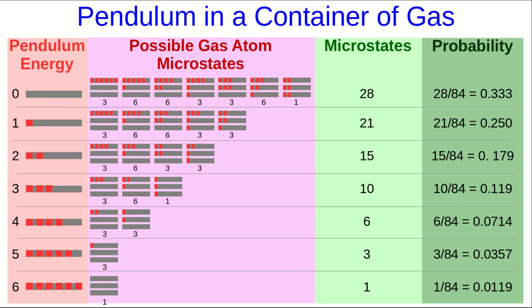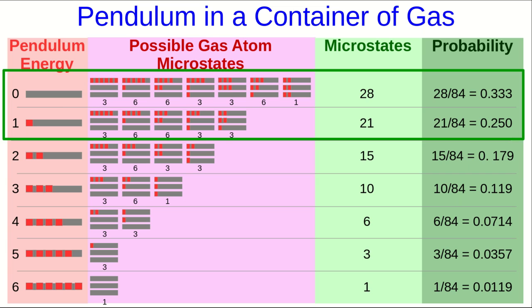And now look at the outcome. Here we see that the most likely outcomes are the pendulum having very little energy. So if you started off and the pendulum had quite a lot of energy, say six units, and you look away and you look back again, by the time you look back, it's very likely that the pendulum is going to have less energy than you saw first.